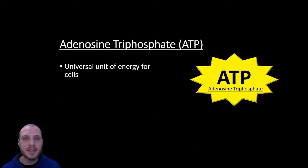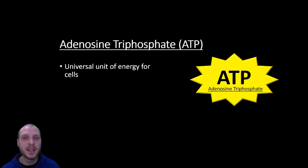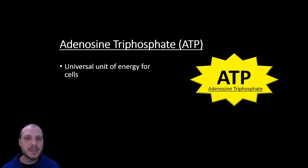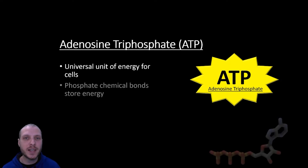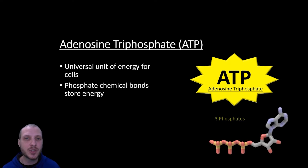Basically, ATP is the go-to molecule to do work inside of a cell, and you'll often see it described as the universal unit of energy for cells. What this means is every cell we know — whether it's single-celled or multicellular organisms like us — is going to use ATP as its source for energy. So let's take a closer look at the chemical structure of ATP.